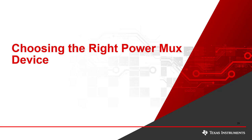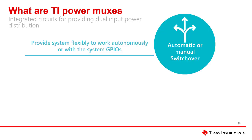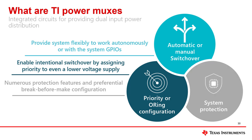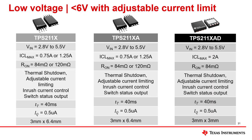Welcome to the next module of the Power Mux Deep Dive, titled 'Choosing the Right Power Mux Device.' In the previous modules we discussed what TI power muxes have to offer. There are key things to consider when choosing the right power mux: first, is automatic or manual switchover required? Is a priority or OR-ing configuration needed? Lastly, what system protections are needed? Using the link here, you can search through TI's power mux portfolio, which will be described in further detail in the next slides.